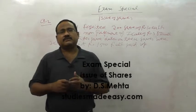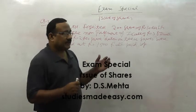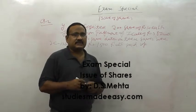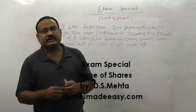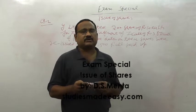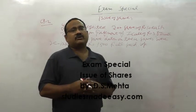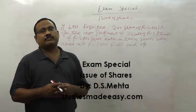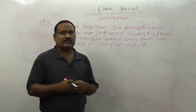Question is, direct question of the forfeiture, where you have to pass the direct entry of the forfeiture. In this question, X limited, Y limited forfeited 200 shares of Rs. 10 each for the non-payment of first call of Rs. 3 and final call of Rs. 2.